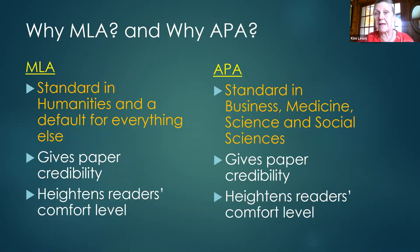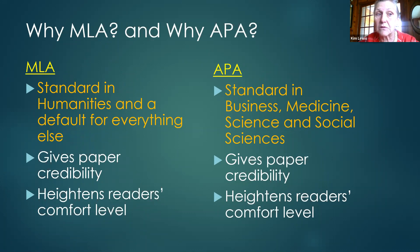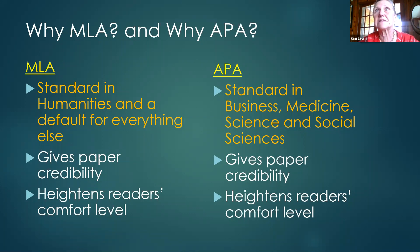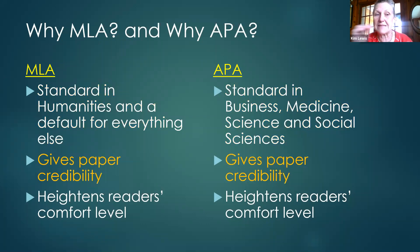MLA is standard for the humanities and just about everything else. Most people in high school learn MLA because citations are taught by English teachers. APA is the standard in business, medicine, social science, and all the sciences — basically intensely career-related fields.